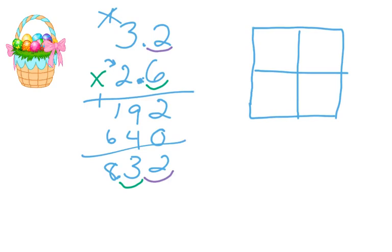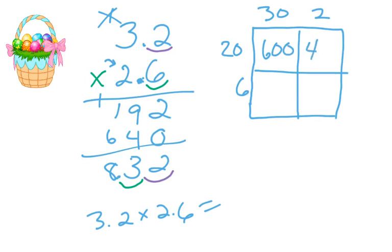If you did area model, you would simply look at it as 32 and 26. I'm going to rewrite the problem out here though. Alright, and we would do 20 times 30, so you have your 2 times 3 is 6, 40, 180, and 12. You would add them together just like you did before.